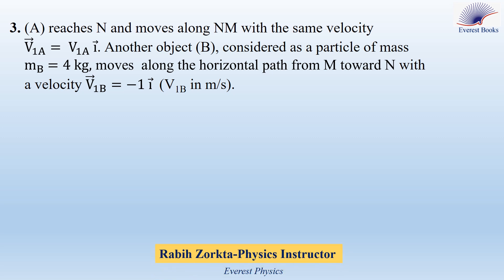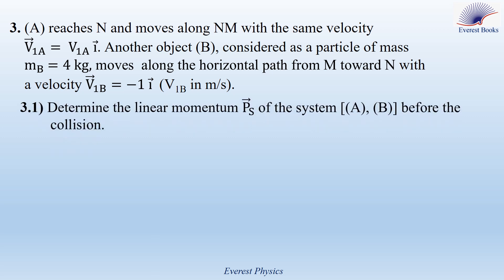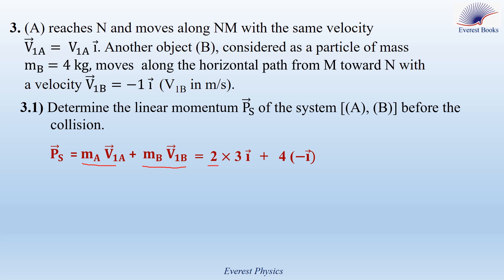Part 3: A reaches N and moves along NM with velocity V1A × i. Another object B, considered as a particle of mass M_B equal to 4 kg, moves along the horizontal path from M towards N with a velocity V1B equal to minus i meters per second. Part 3.1: Determine the linear momentum P_S of the system AB before the collision. The linear momentum of system AB equals the linear momentum of A plus that of B: M_A × V1A plus M_B × V1B. With M_A = 2 kg, V1A = 3i, M_B = 4 kg, and V1B = −i, P_S is equal to 2i kilograms meters per second.